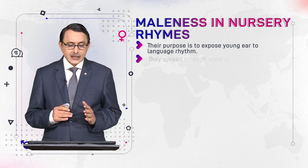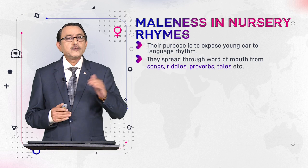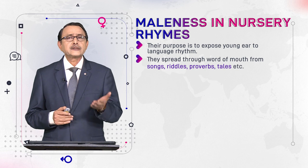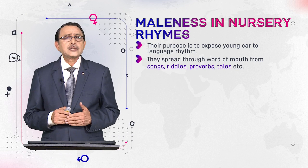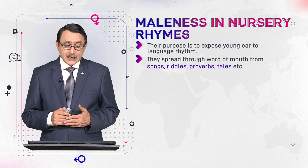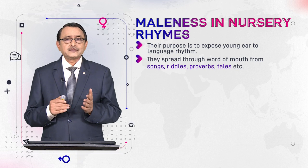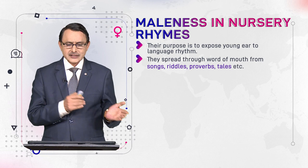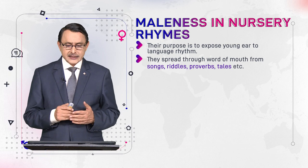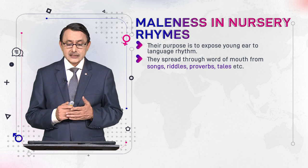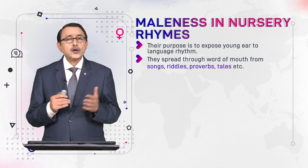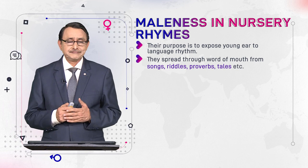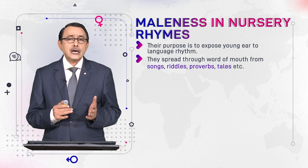This is their basic aim. They spread through word of mouth; they are not written, they are part of oral literature, though later they are published. But originally they were spread orally from generation to generation. And like songs, riddles, proverbs, and tales, they are all part of the same kind of literature — nursery rhymes are one of them.